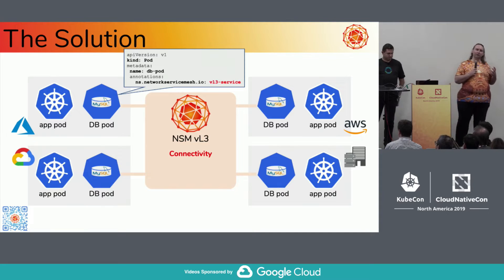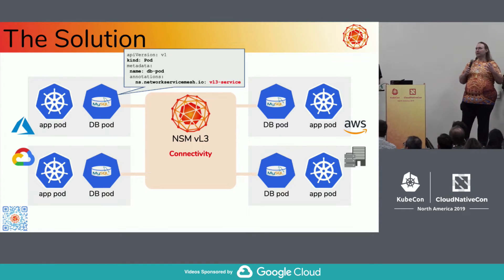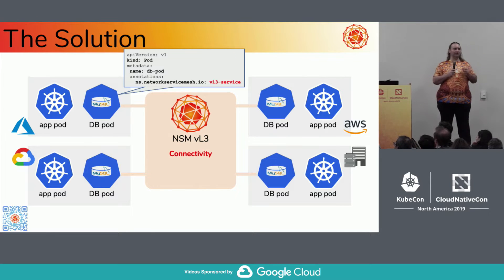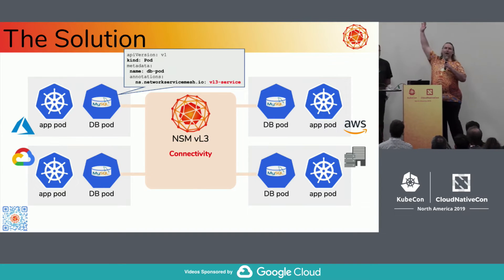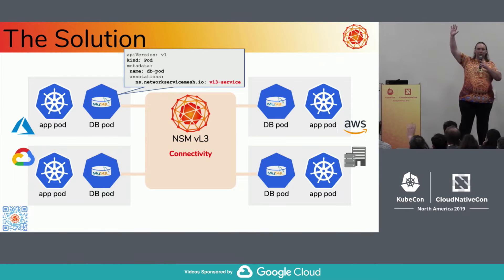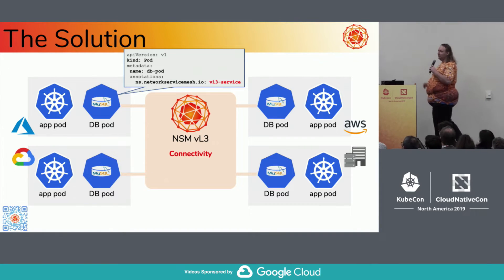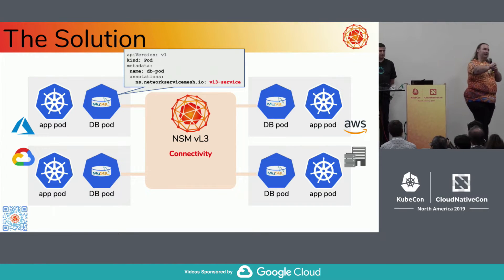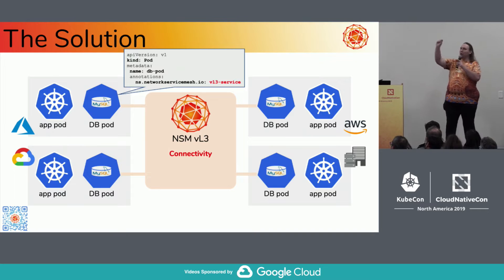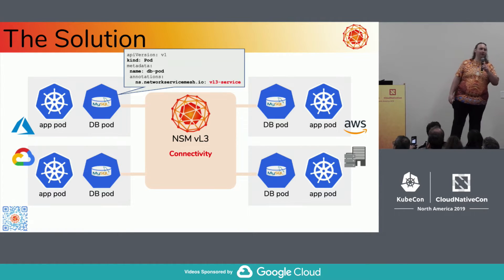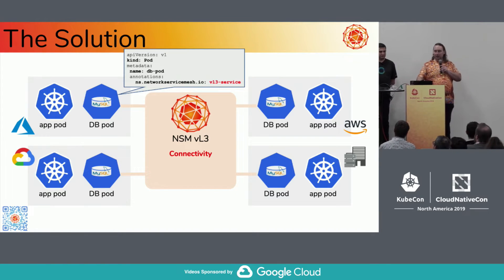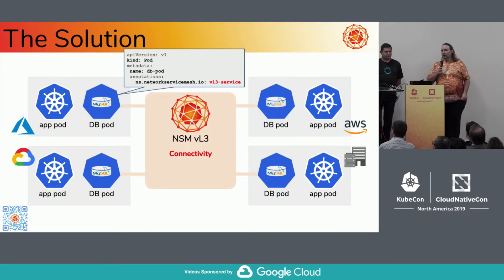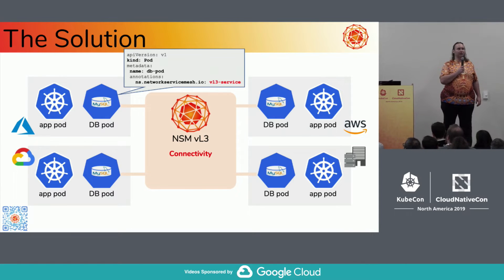The way this ends up looking in Network Service Mesh, we have a very simple example called the virtual layer 3 — or VL3 domain. In Kubernetes, every pod can talk to every other pod with an IP address over L3. This is exactly the same principle, except in this case it's every pod connected to that connectivity domain, no matter where they're running — completely different cloud providers. The way you deploy the database pod is very simple: you add a single annotation that says 'I would like the network service VL3 service.' You ask for what you want by name.